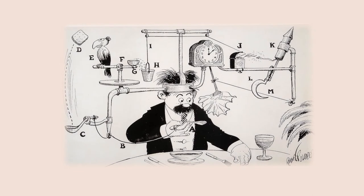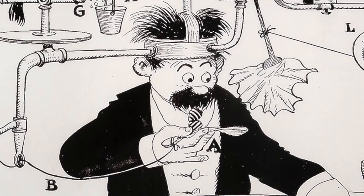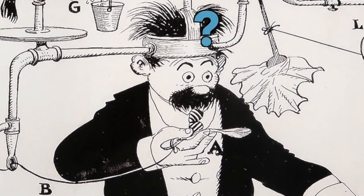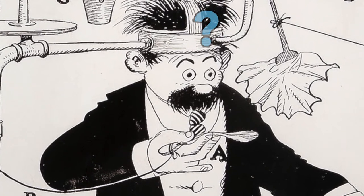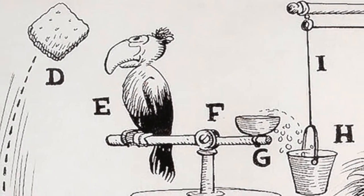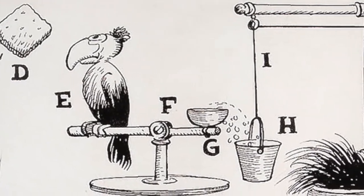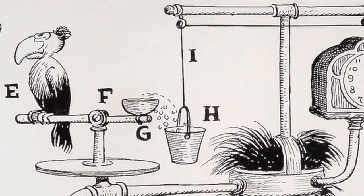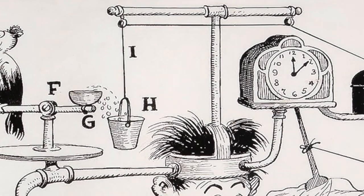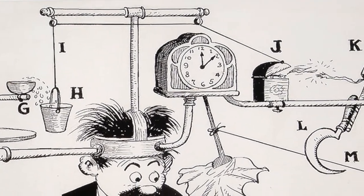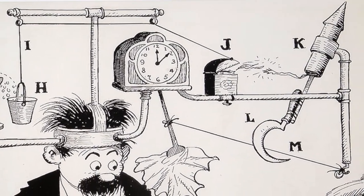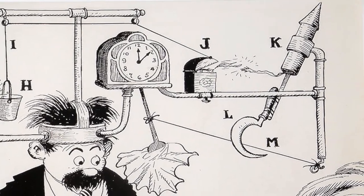Now what do you think will happen? Remember, this machine is called the self-operating napkin. I wonder, do you think the energy will ever get to the napkin? How? Well, I can imagine the energy in Rube's machine will continue to bump, tap, and tug itself all the way through the pulleys, the matchbox, the firecracker, and cut the string until the energy frees the napkin attached to the clock.